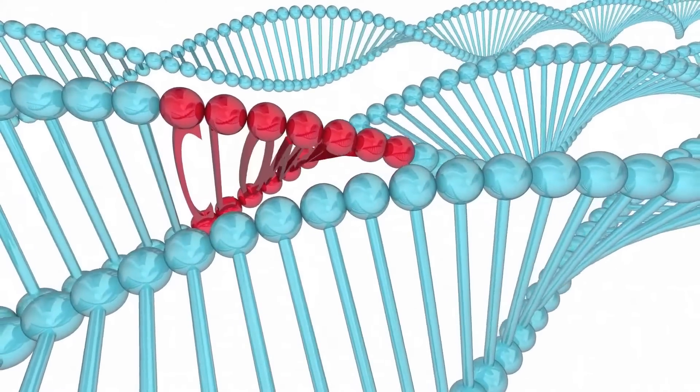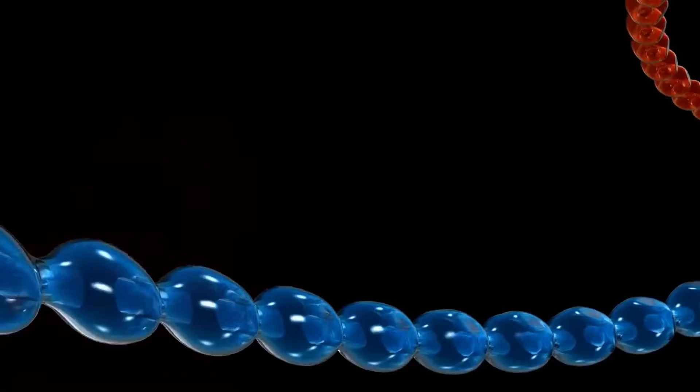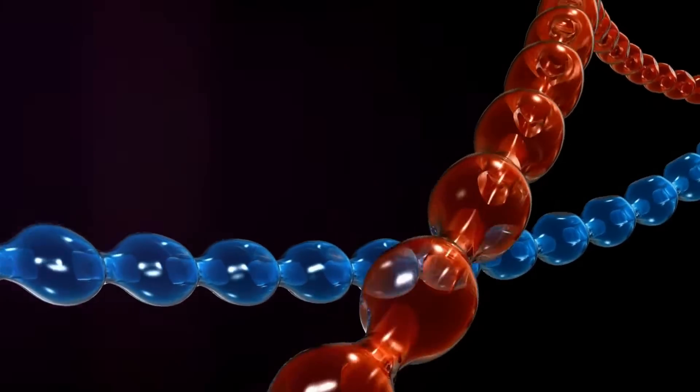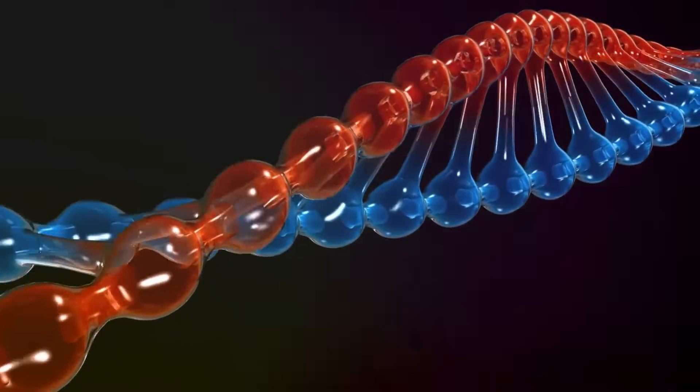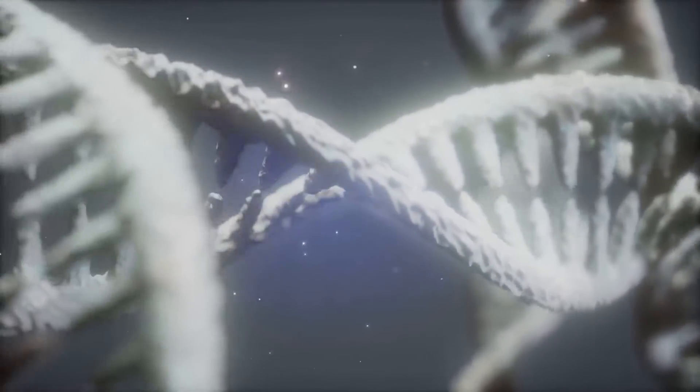These base pairs are organized into units called nucleotides. A nucleotide consists of a sugar molecule, a phosphate molecule, and one of the four bases. Nucleotides are the building blocks of DNA.